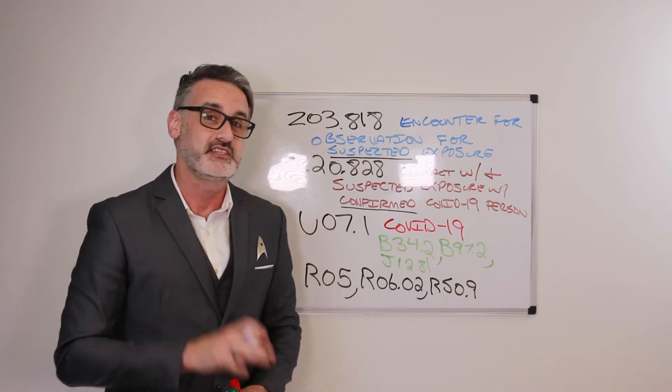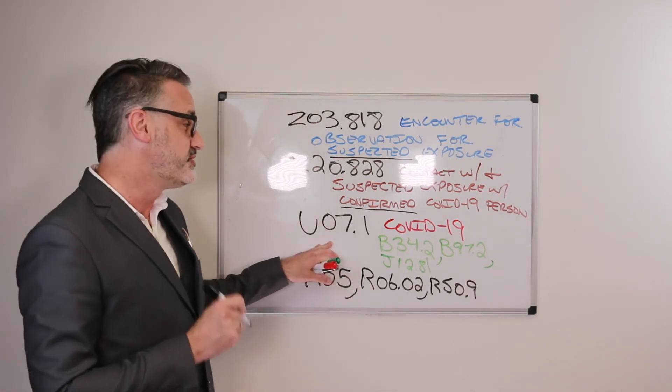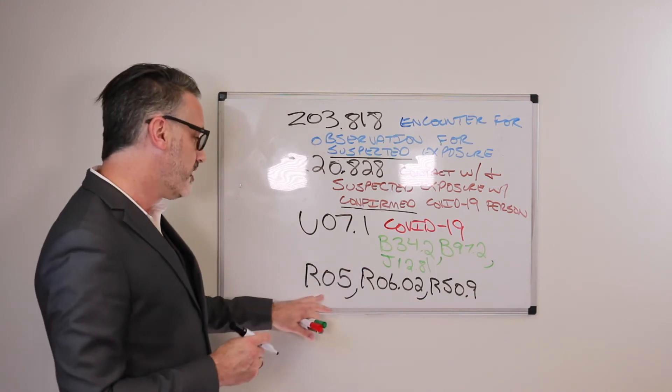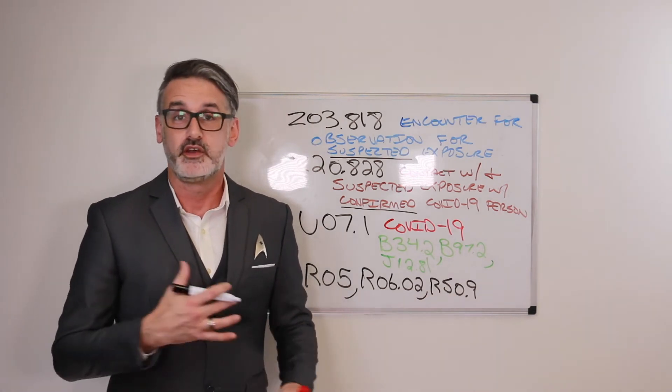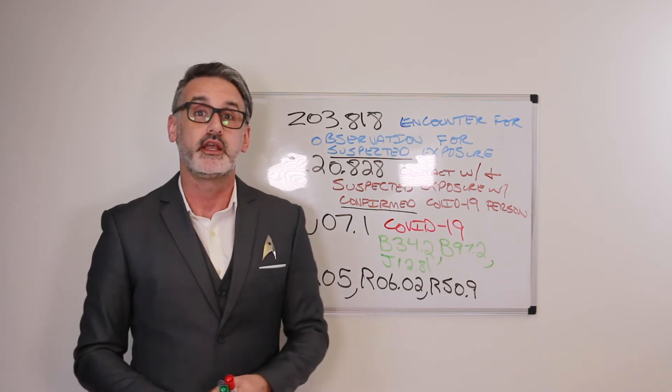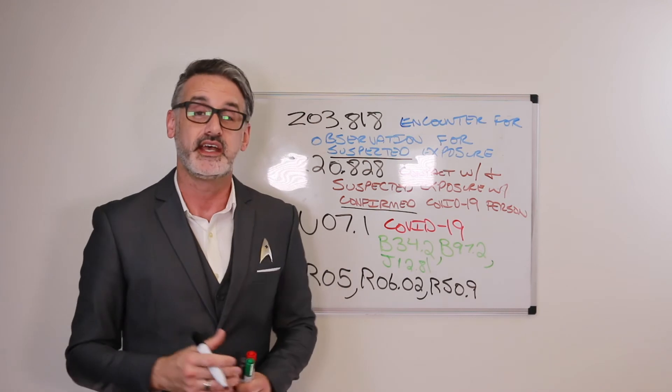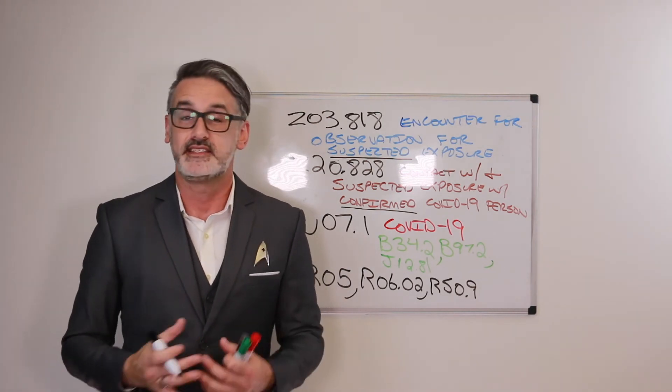But if a patient has a positive COVID-19 result, then we would use the U07.1 code because all these conditions, cough, shortness of breath, and fever are symptoms of COVID-19. So that goes back to the default ICD-10 coding, where if we have signs and or symptoms and we have a definitive diagnosis, then we only code the definitive diagnosis, not the signs and symptoms in that case.